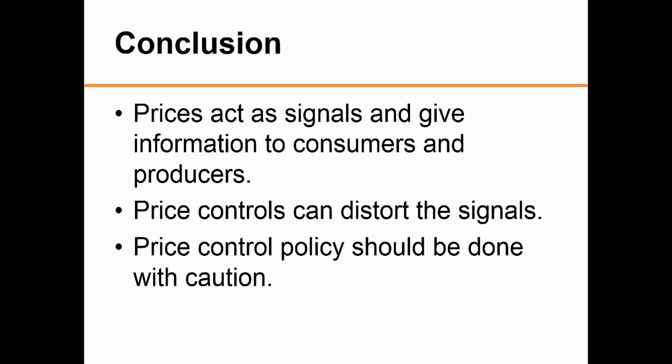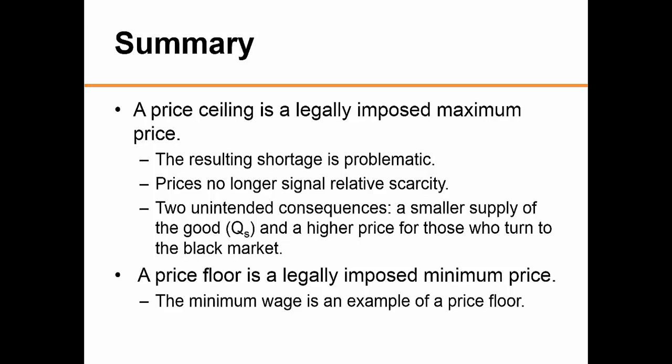To conclude, we've seen that prices act as signals and give information to consumers and producers. However, price controls can distort these signals, and price control policy should be done with caution because it can have unintended consequences. As a summary: a price ceiling is a legally imposed maximum and the resulting effect is a shortage, which is problematic. Prices no longer act as a signal to indicate the scarcity of resources. Two unintended consequences are a smaller supply of goods and a higher price for those who turn to the black market.